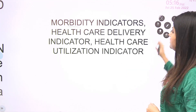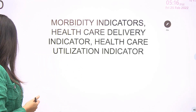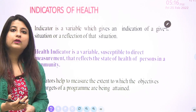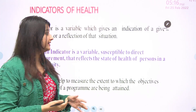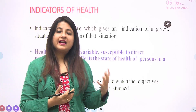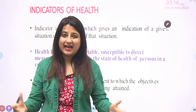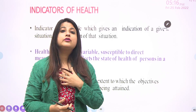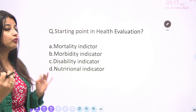We'll talk about morbidity indicators now. Before that, let's quickly revise what indicators are. A health indicator is a variable which reflects the health status of a population. It helps us find out about the health status of a population so we can accordingly conduct planning. It tells us about the health status of a community.